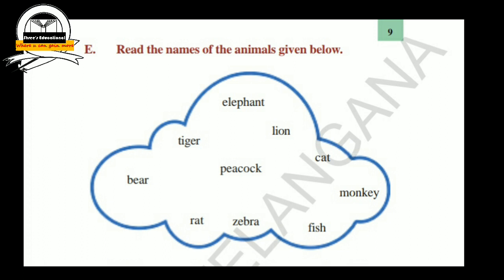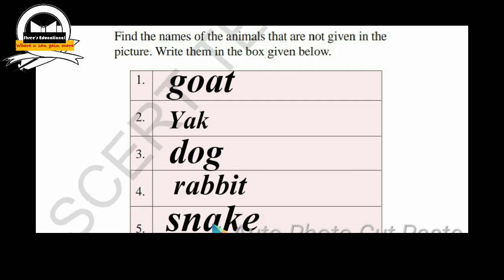In the next E bit, read the names of the animals given below: elephant, lion, tiger, peacock, cat, deer, monkey, rat, zebra, fish. Next, find the names of the animals that are not given in the picture and write them in the box given below.